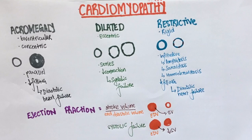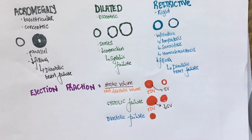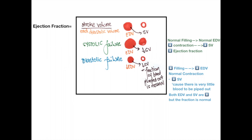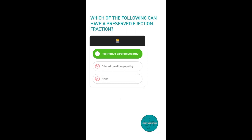In restrictive cardiomyopathy, the ventricles don't expand much, so the end diastolic volume is low. But from all the blood that comes into the ventricles, a good amount of it is pushed out. Although the amount of blood leaving the heart is less, the fraction of blood pumped out of the ventricles is normal. Hence, patients with restrictive cardiomyopathy and diastolic failure in general are likely to have a preserved ejection fraction.